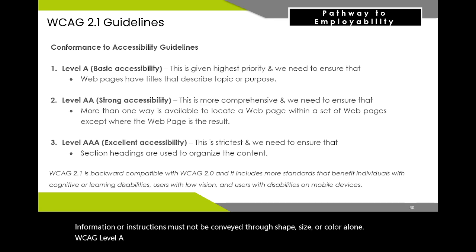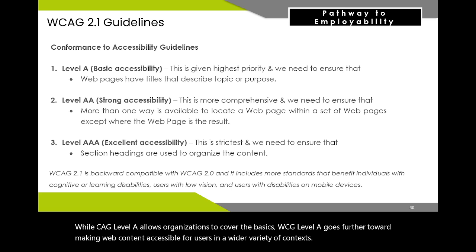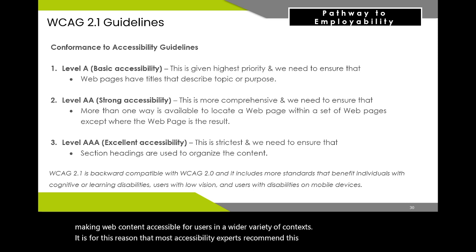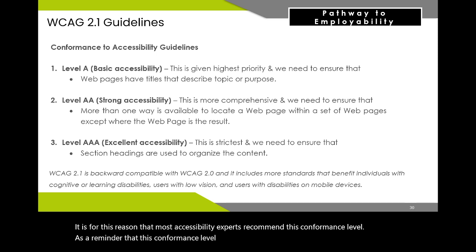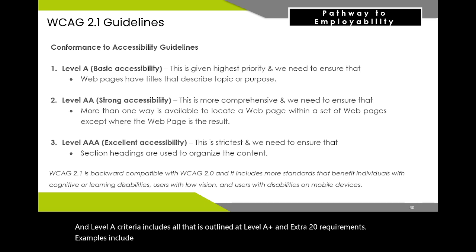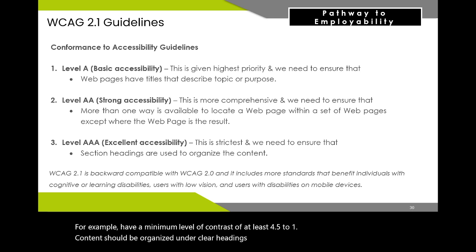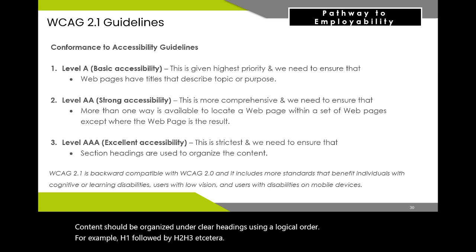WCAG Level AA is the mid-range and most common level of conformance to obtain. While Level A covers the basics, Level AA goes further toward making web content accessible in a wider variety of contexts, and most accessibility experts recommend this conformance level. At this level, the web page satisfies all Level A and Level AA success criteria — Level AA includes all Level A requirements plus an extra 20 requirements. Examples include: text and background must use good color contrast with a minimum ratio of at least 4.5 to 1; content should be organized under clear headings using a logical order such as H1 followed by H2, H3, etc.; and elements that affect navigation should be consistent across the site.